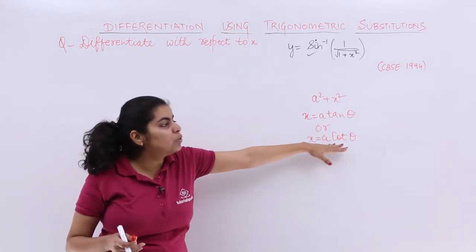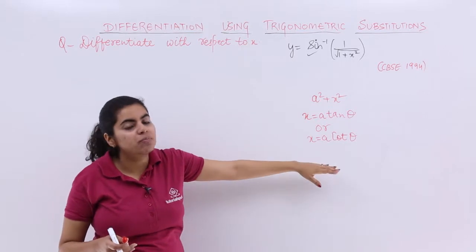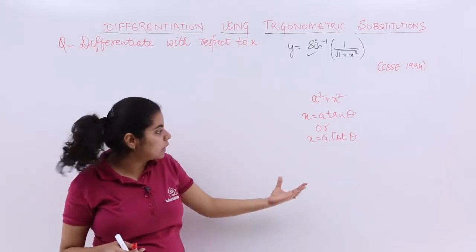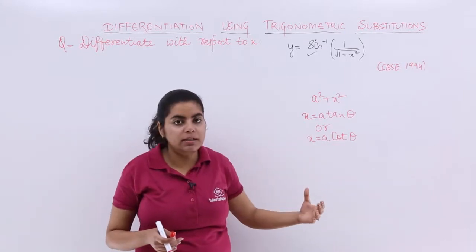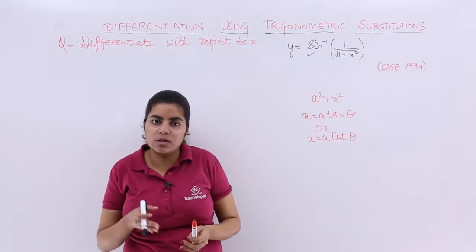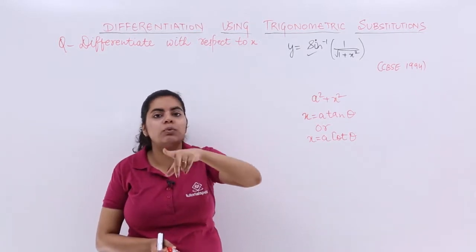So if I substitute x as cot θ, what will happen? If my x will be cot θ, my task will be simpler because x = cot θ means 1 + cot² θ, which is cosec² θ, and cosecant is the reciprocal of sin.